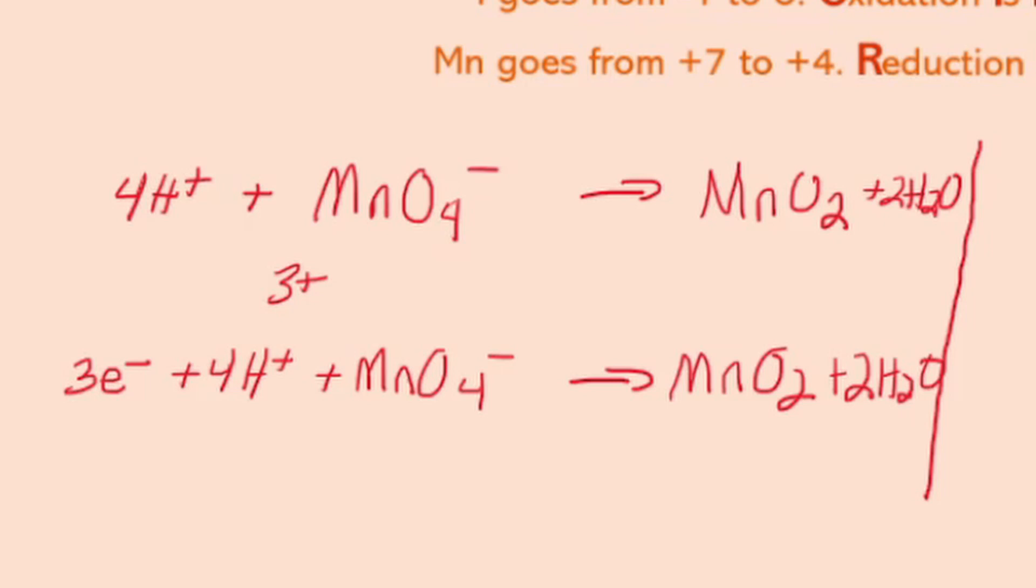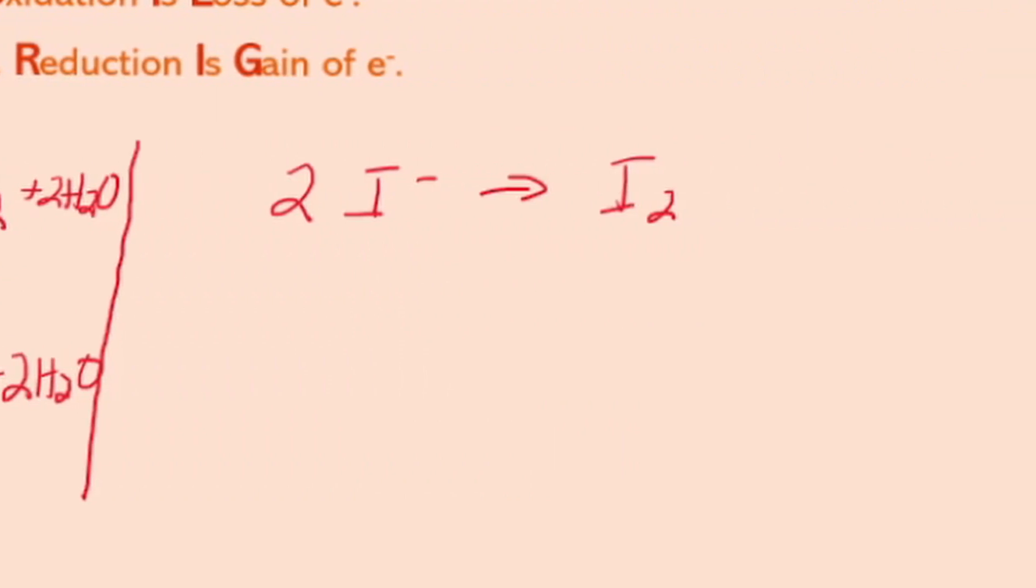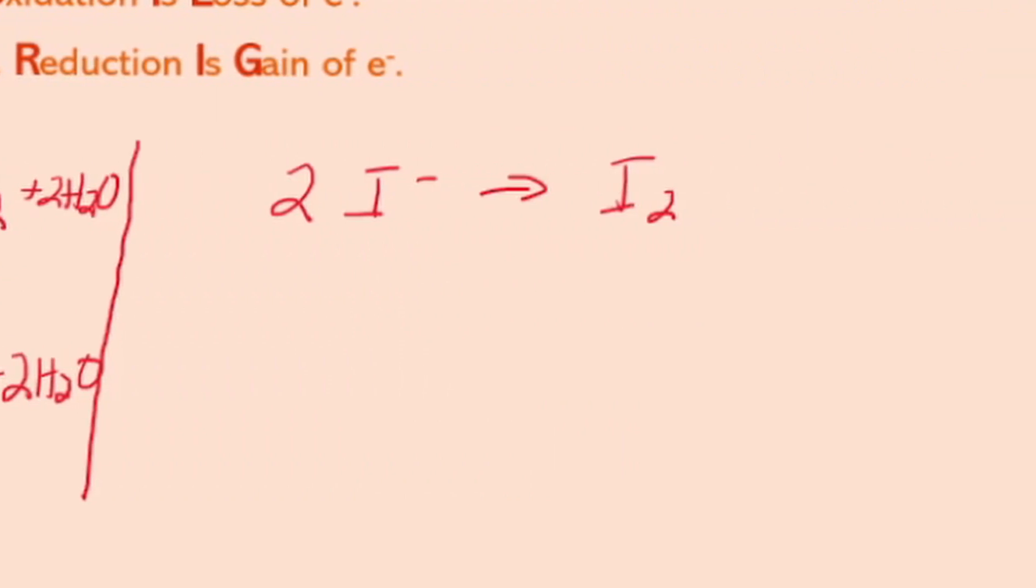Okay so if I add all my charges up I should be balanced now. I'll come over to this side. I got to balance the charges here so in this case you can see I've got a two minus net charge zero and so I've got to add electrons so I'm going to get 2I-